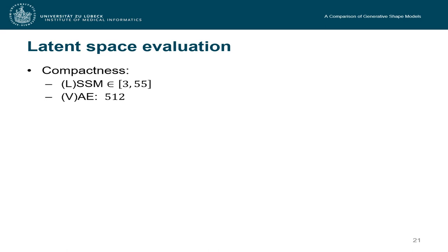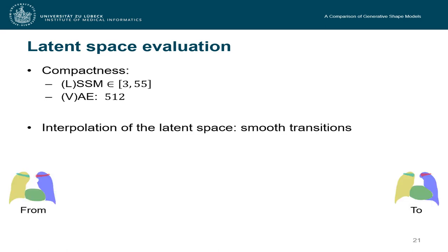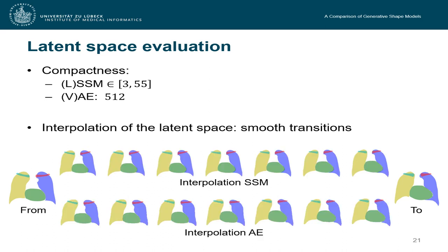Another experiment we can make is to pick two shapes and interpolate between them in their latent space. And we see that for the different methods, the interpolations are pretty smooth, which means that our latent space is smooth and doesn't have any holes in it.